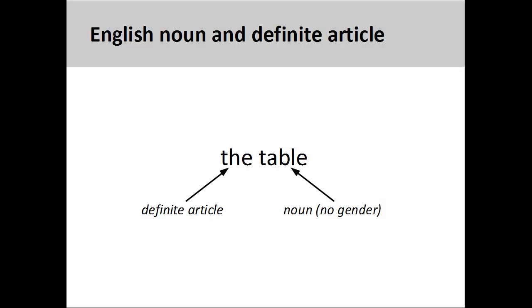A noun is a part of speech that names a person, place, thing, or idea. In modern English, nouns usually do not manifest any grammatical gender. The only definite article in English is 'the.'